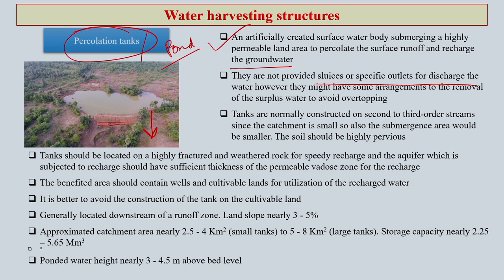Percolation tanks or ponds are normally constructed on second or third order water streams because the catchment is generally small and the submergence area would be relatively smaller. The soil needs to be highly percolating in nature because whatever water is stored in the percolation pond has to percolate down to recharge the groundwater.